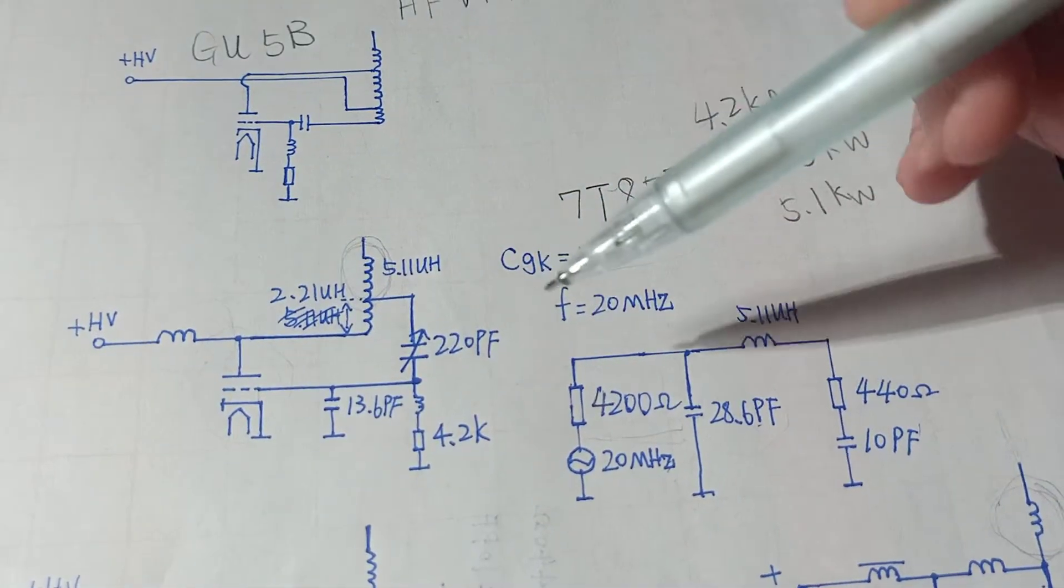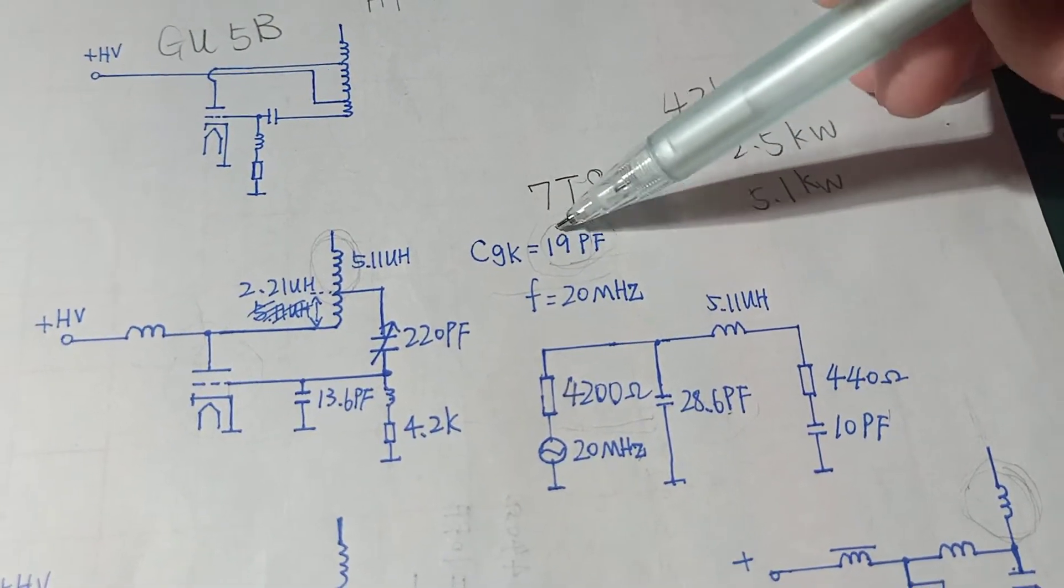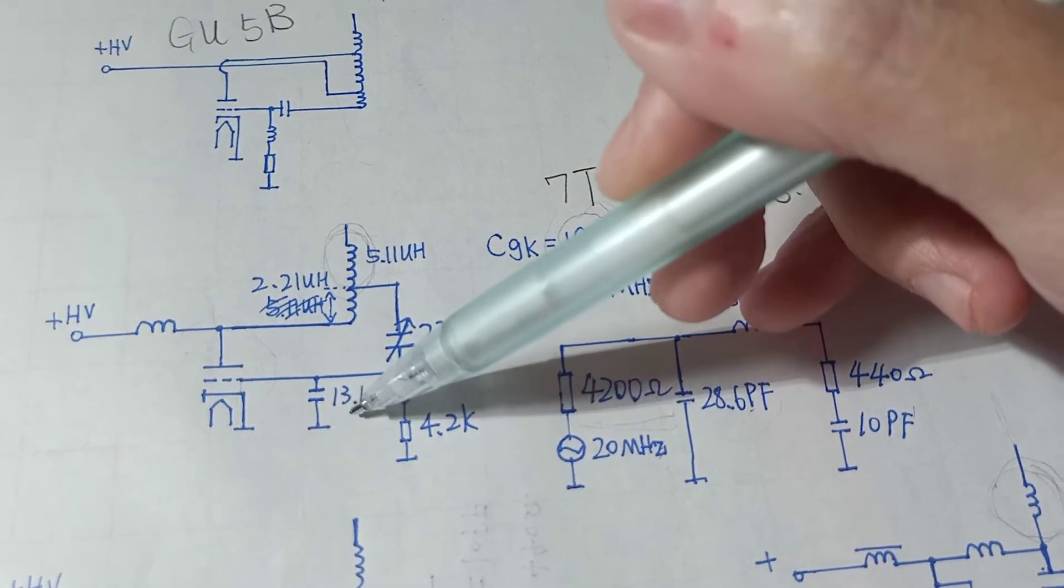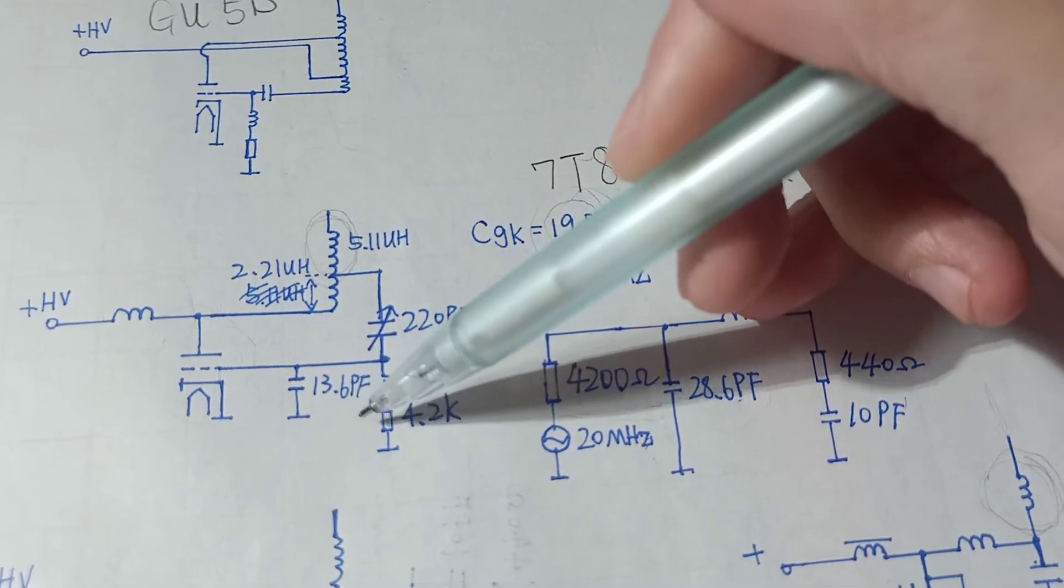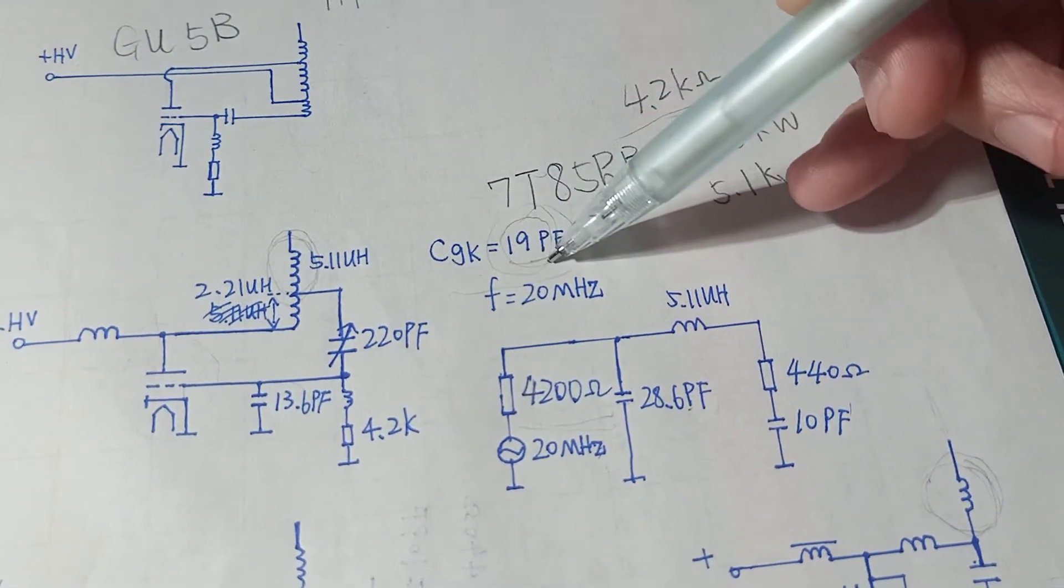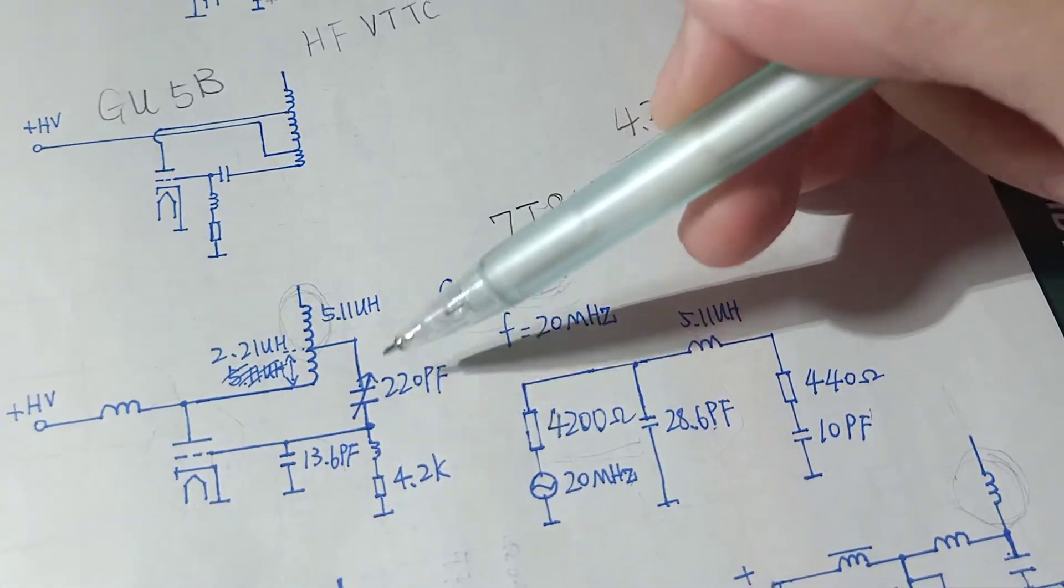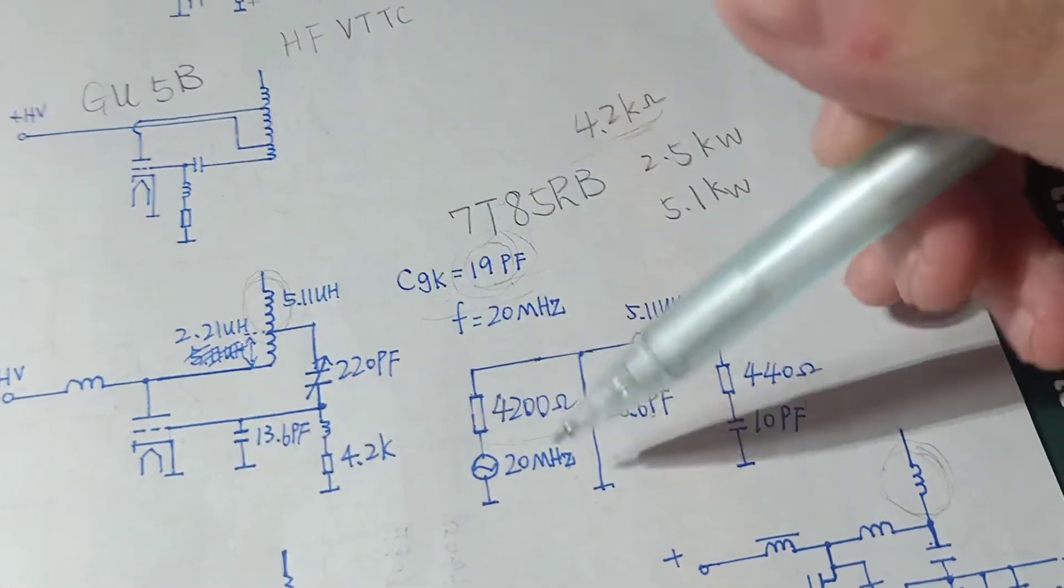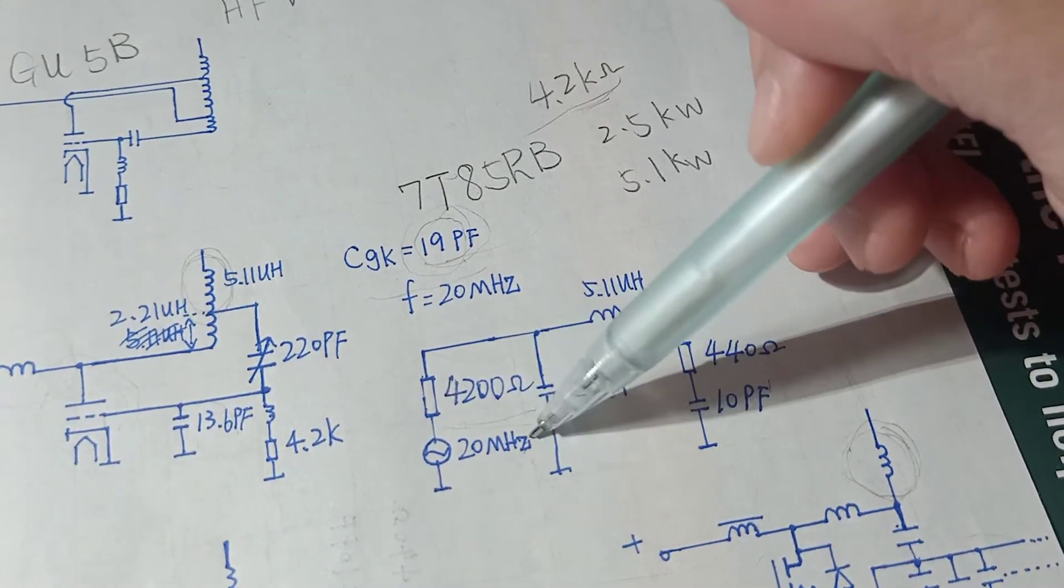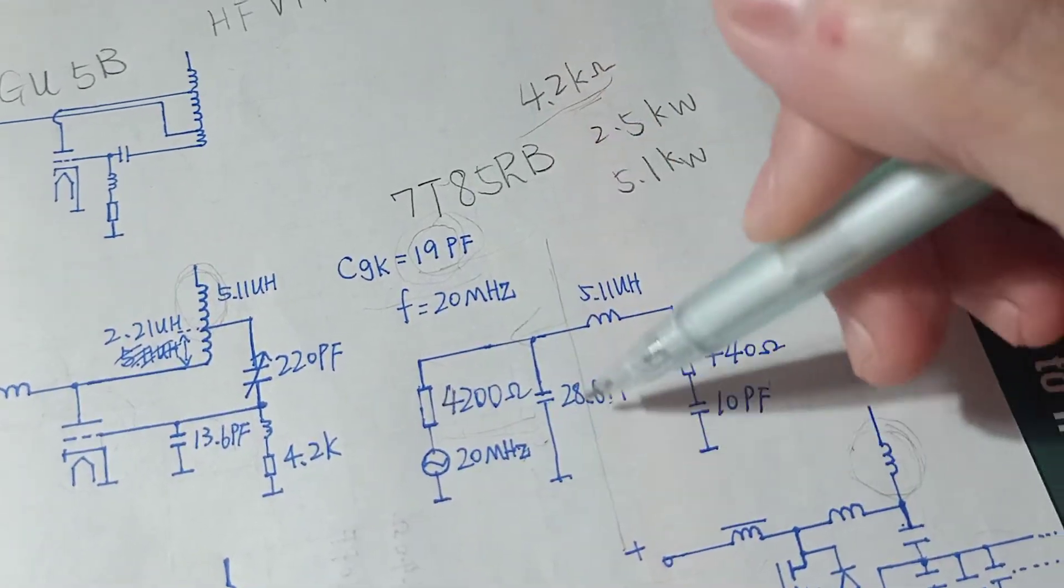I set this vacuum variable capacitor at its largest value, 220pF. And this capacitor in series with the grid cathode capacitor here. That capacitor of this tube equals to 19pF. And I added another 13.6pF capacitor in parallel with the grid cathode capacitor. So these three capacitors, we have a 28.6pF capacitor. And this part of the circuit, left side, is the source impedance.